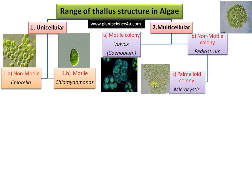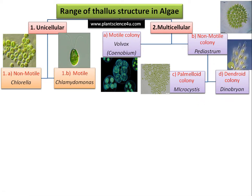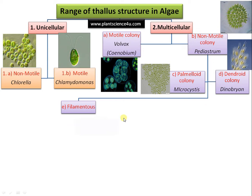Then there is a dendroid colony, like Genobrium, where there is mucilage only at the base and you can see a tree-like appearance under the microscope — that's why it is called a dendroid colony. The next group is filamentous. The majority of microscopic algae are filamentous.